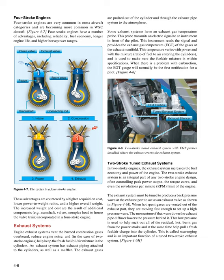Two-stroke tuned exhaust systems increase the fuel economy and power of the engine. The two-stroke exhaust system is an integral part of any two-stroke engine design, often controlling peak power output, the torque curve, and even the RPM limit of the engine. The exhaust system must be tuned to produce a back-pressure wave at the exhaust port to act as an exhaust valve. When hot spent gases are vented out of the exhaust port, they set up a high-pressure wave, and the momentum of that wave down the exhaust pipe diffuser lowers the pressure behind it. That low pressure helps suck out residual hot burnt gas and pull a fresh fuel/air charge into the cylinder — called scavenging.